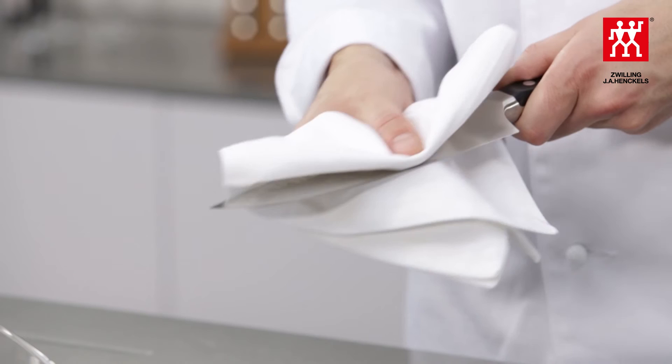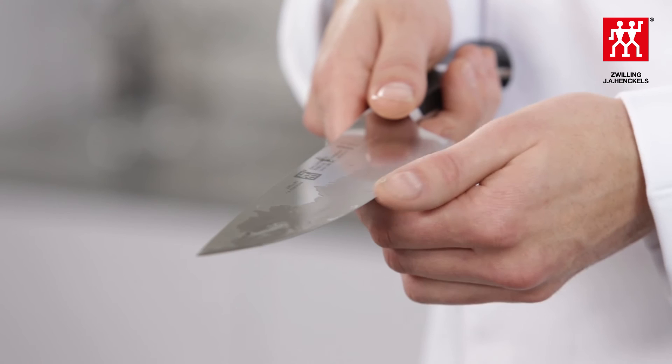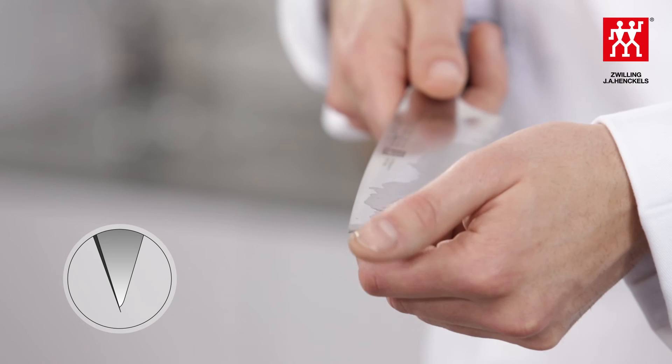From the tip, to the middle, to the heel of the blade. Check that you have successfully sharpened your knife by cleaning the knife and then gently running the tip of your thumb over the cutting edge on the rear side of the sharpened blade. You should feel an even burr along the entire length of the blade.